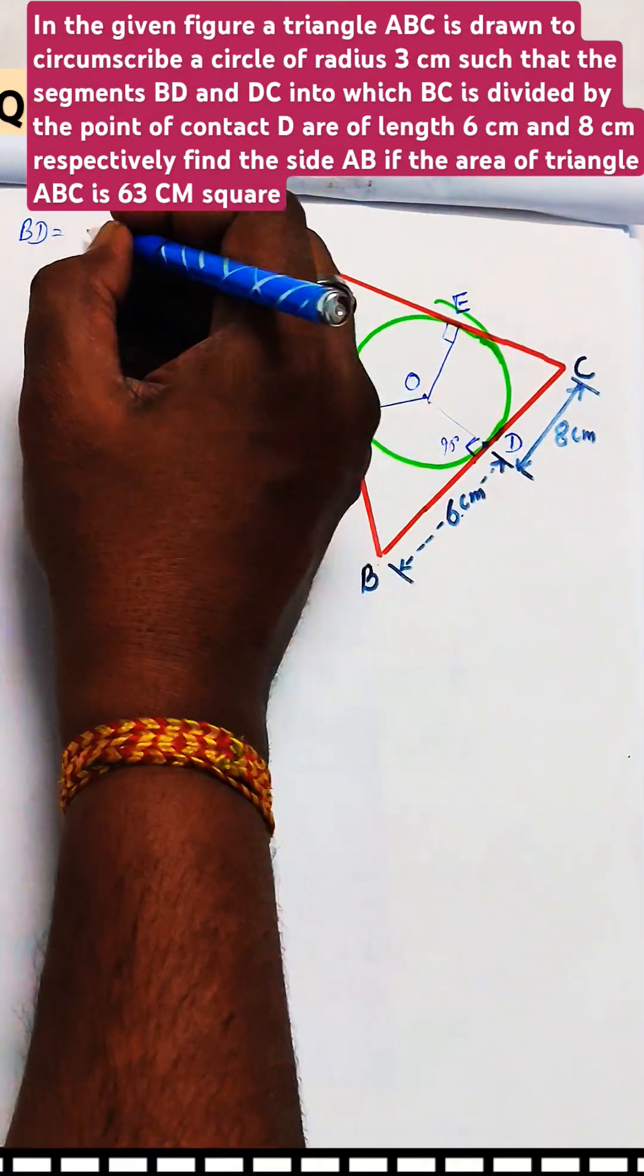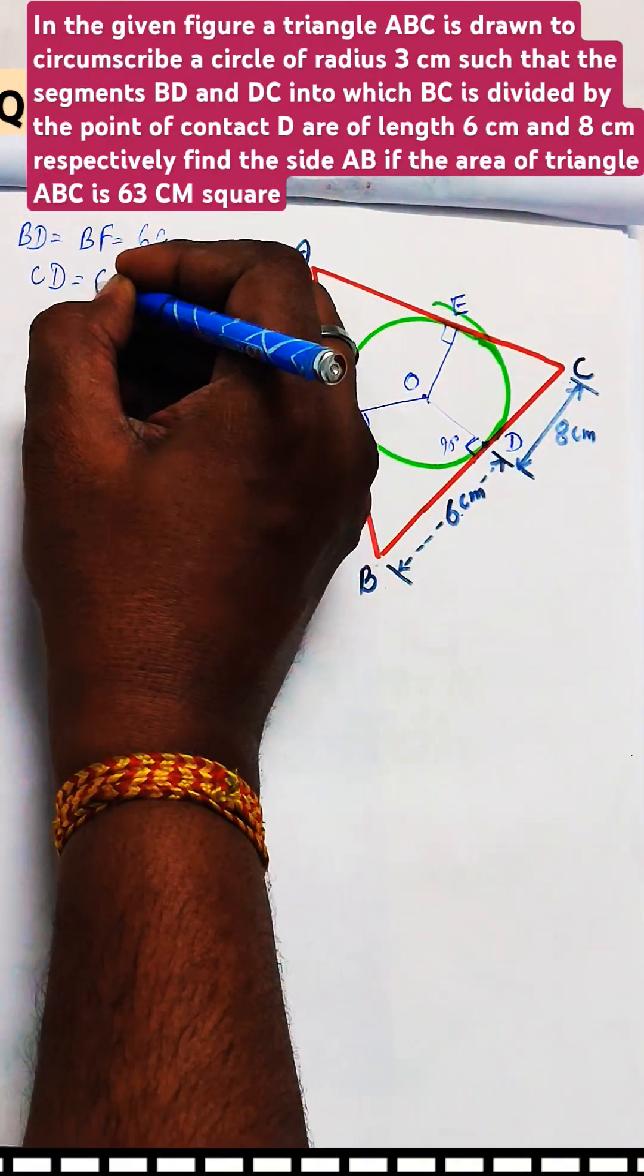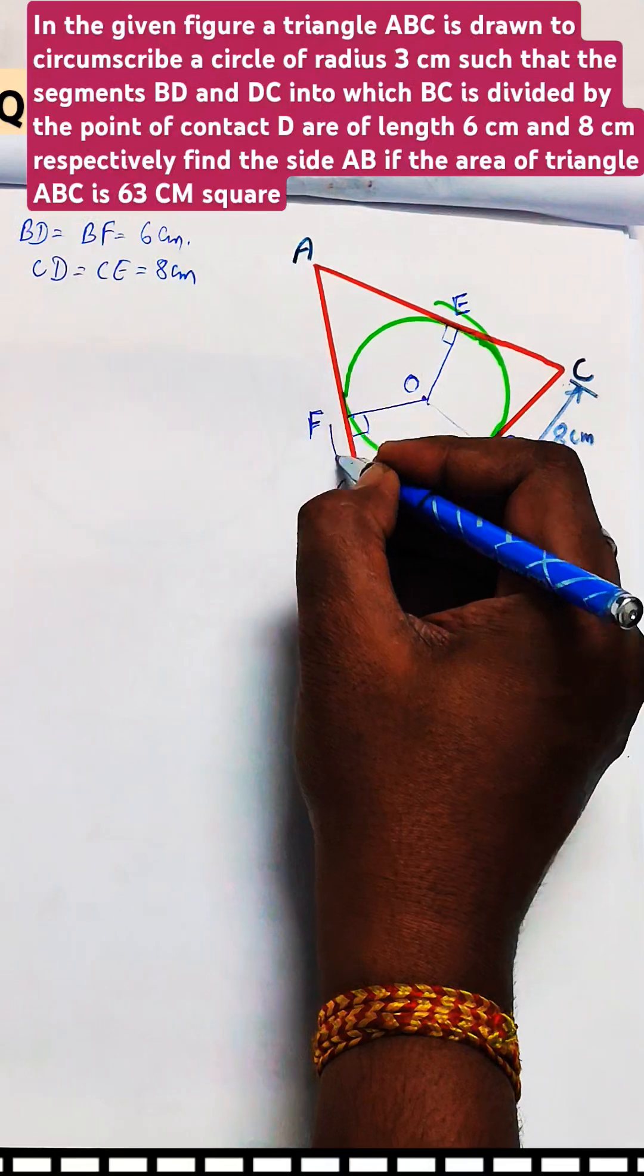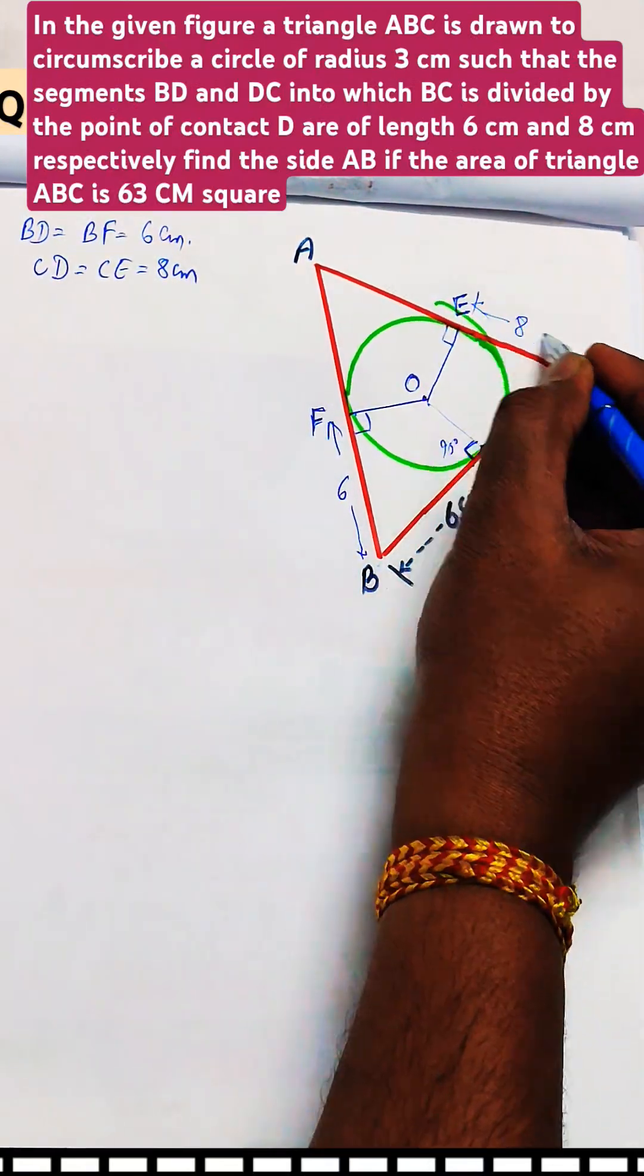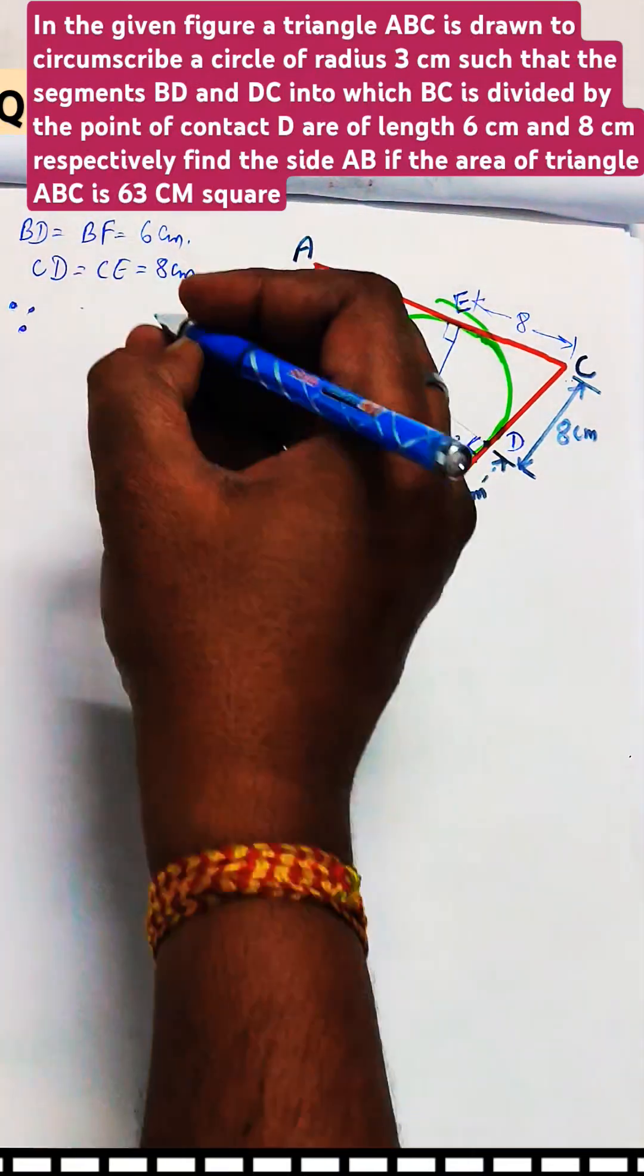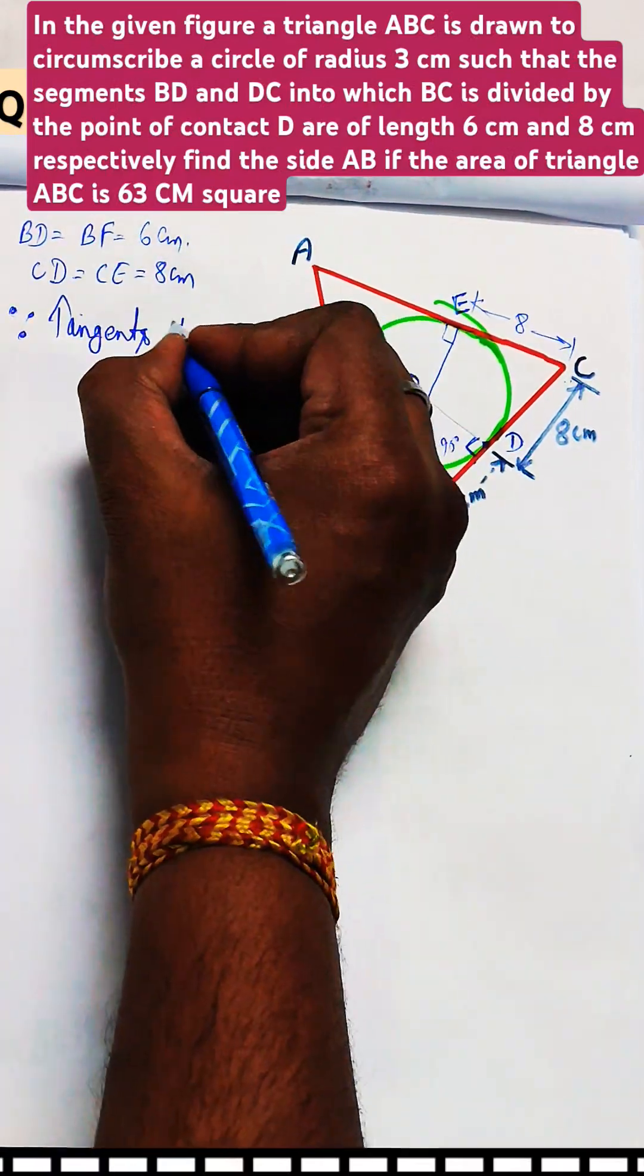So definitely OD, OA and OF are perpendicular to BC, AC and AB respectively. You know that tangents drawn from an external point to the same circle are always equal in length.